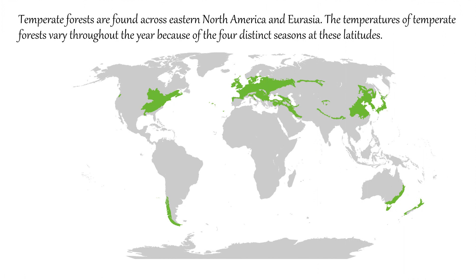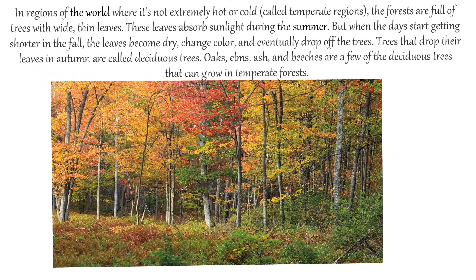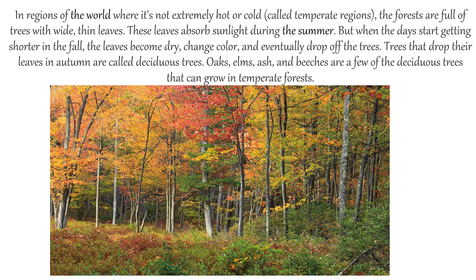Temperate forests are found across eastern North America and Eurasia. The temperatures of temperate forests vary throughout the year because of the four distinct seasons of these latitudes. In regions of the world where it is not extremely hot or cold, the forests are full of trees with wide thin leaves. These leaves absorb sunlight during the summer, but when the days start getting shorter in the fall, the leaves become dry, change color and eventually drop off the trees.